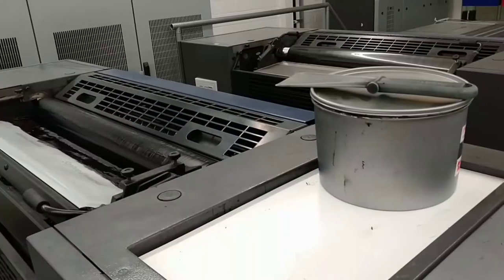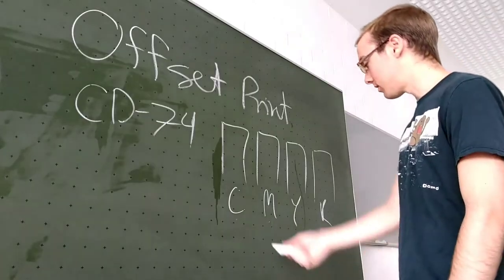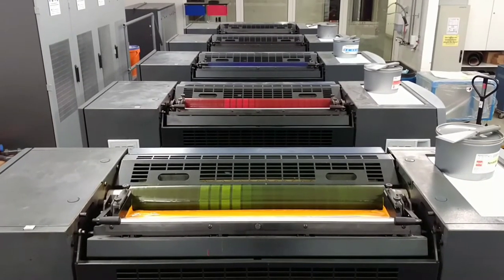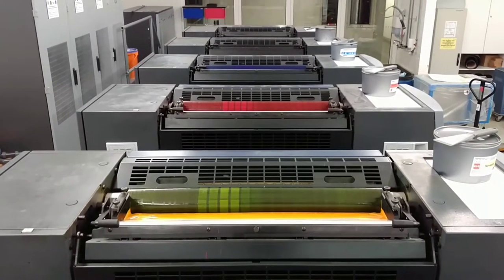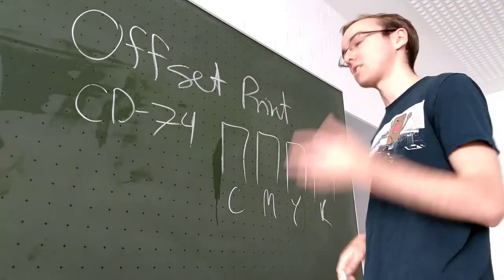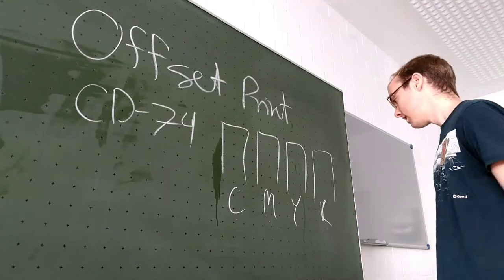And we're only using four of those because we have C, M, Y, K, which is cyan, magenta, yellow, and key for black. And pretty much all of the prints in all subprint are composed of these four colors in different amounts of mixed together dots. And the way the dots are mixed together is also kind of different.